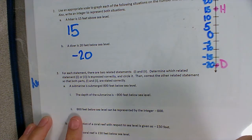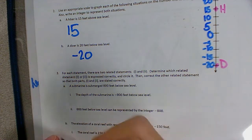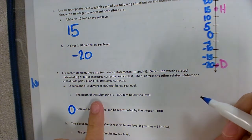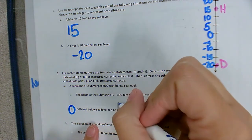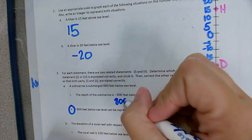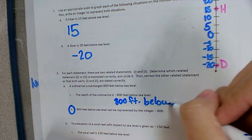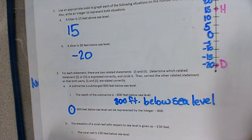But two, 800 feet below sea level can be represented by the integer negative 800 is correct. So we'll circle that one. And we're going to rewrite the first statement. So we would rewrite this without the negative sign. So we'd say, 800 feet below sea level, rather than negative 800 feet below sea level.